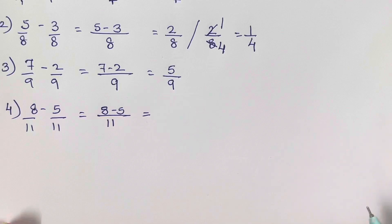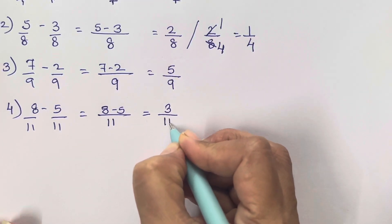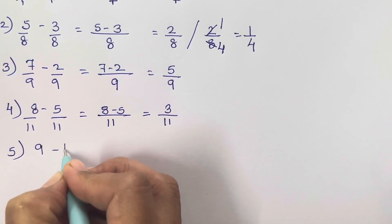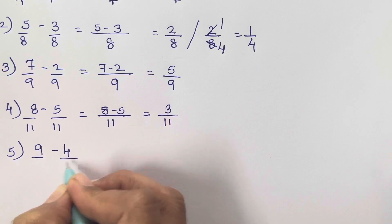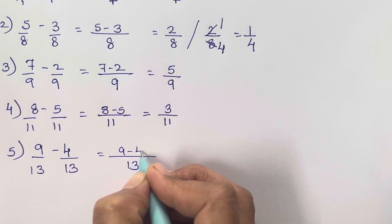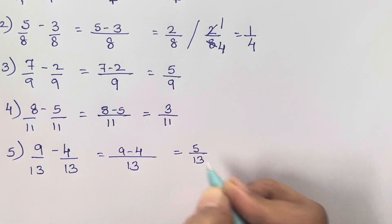So 8 minus 5 is going to be 3 upon 11. The fifth is 9 minus 4, 13 upon 13, so 13 will come over here. 9 minus 4, so 9 minus 4 is going to be 5 upon 13.